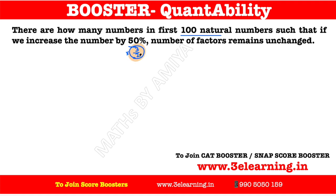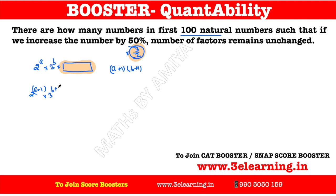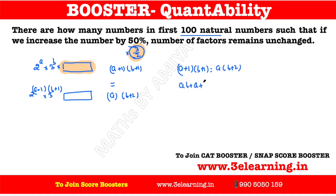So we have to multiply by 3/2. We concentrate that the number contains 2 and 3 as factors. Other primes could or could not be present. The number of factors: when we multiply by 3/2, the power of 2 will decrease by 1 and the power of 3 will increase by 1. Other prime factors will not change. So the total number of factors becomes (a)(b+2).